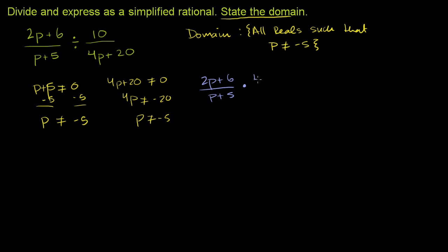Multiplying by 4p plus 20 over 10. I changed the division into a multiplication and I flipped this guy right here.